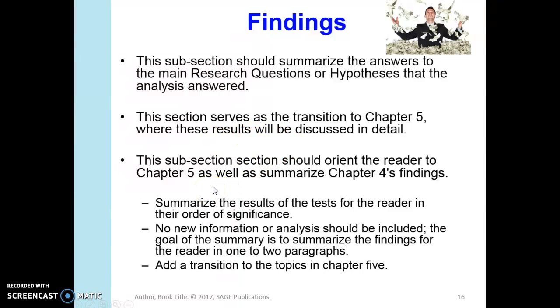That's when you get to editorialize, when you get to chapter 5, you can talk about what you think and what you think the results indicated. This subsection should orient the reader to chapter 5, in other words, at the end of your findings, you can, some people even write a summary statement besides that, and they prepare someone for chapter 5 saying we're going to discuss these. It's only a couple sentences it takes to do it. So what are you going to do? You're going to summarize the results of the test for the reader in their orders of significance. You're not going to add any new information or analysis should be included. You're not going to do anything other than tell about it. And the goal of the summary is to summarize the findings for the reader in one or two paragraphs. Then you're going to add a transition to the topics in chapter 5.